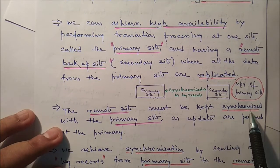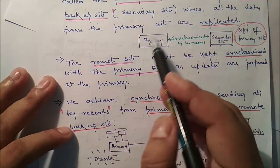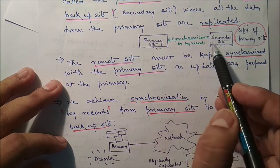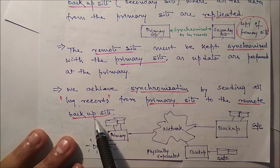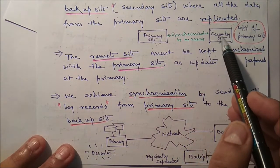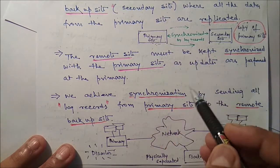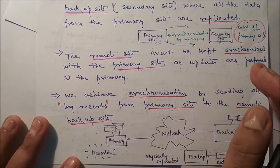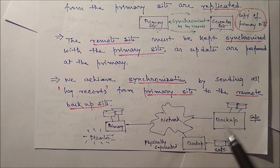The remote site must be kept synchronized with the primary site as updates are performed at the primary. Whatever changes are going on in the primary site, those changes must be reflected in the secondary site — this is possible only if they are synchronized. We achieve synchronization by sending all the log records from the primary site to the remote backup site. We periodically send log records so that if any failure occurs, the secondary site can use the log to achieve the most recent update.